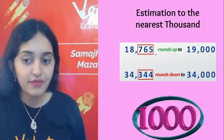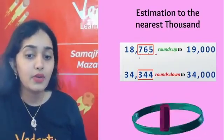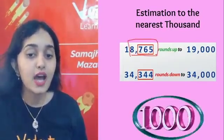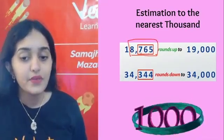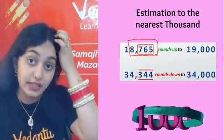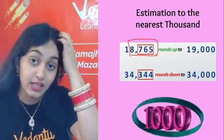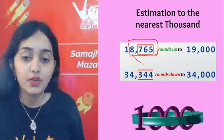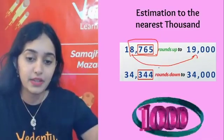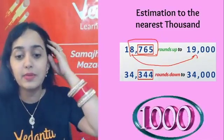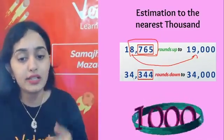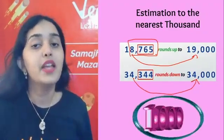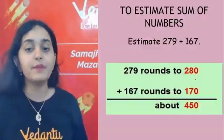For estimation to nearest 1000, let's take 8,765. We check if 765 is more or less than 500. Since 765 is more than 500, it is on the higher side, so 8,765 will be rounded off to 9,000. Similarly, for a number like 34,344 — since 344 is less than 500, it is on the lower side, so it will be rounded off to 34,000.